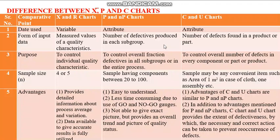Welcome to another lecture in statistical quality control. We were discussing control charts. Let us see the difference between X-bar, P, and C charts all three in one table. The first comparison is about the data used: X-bar and R charts use variable data, while NP, C, and U charts use attribute data.